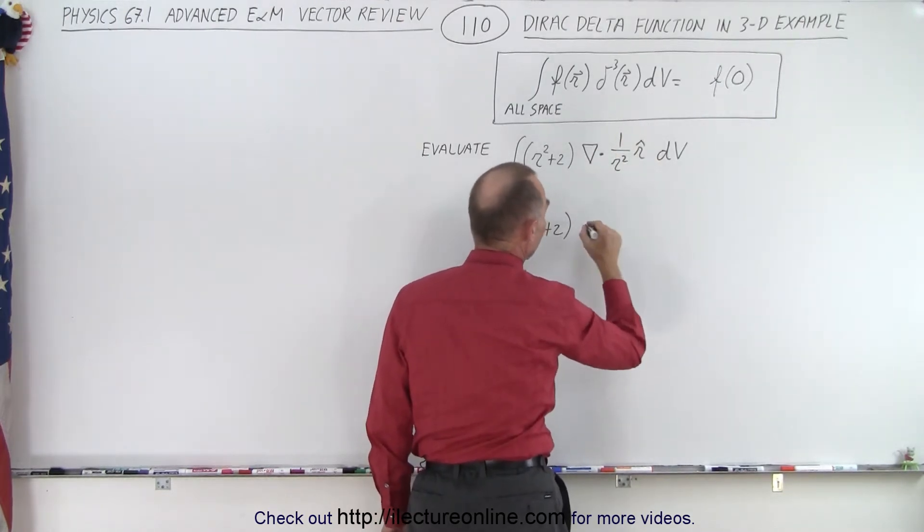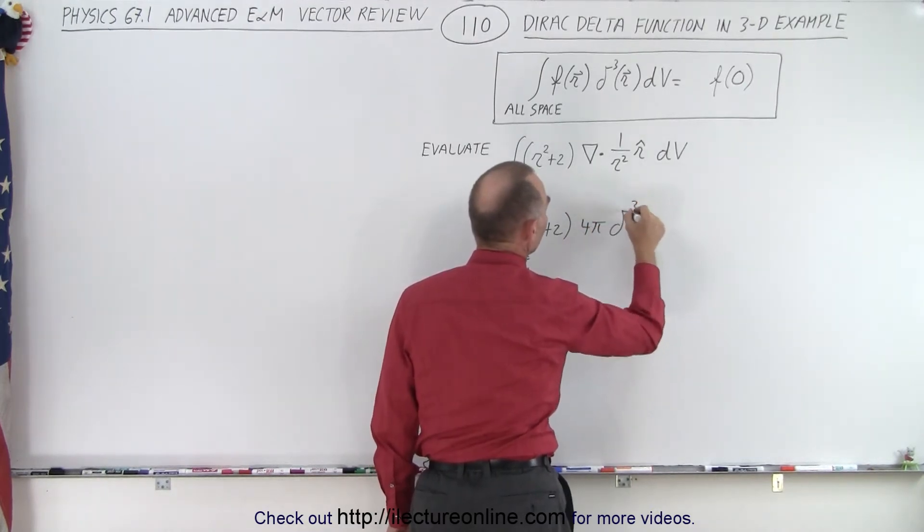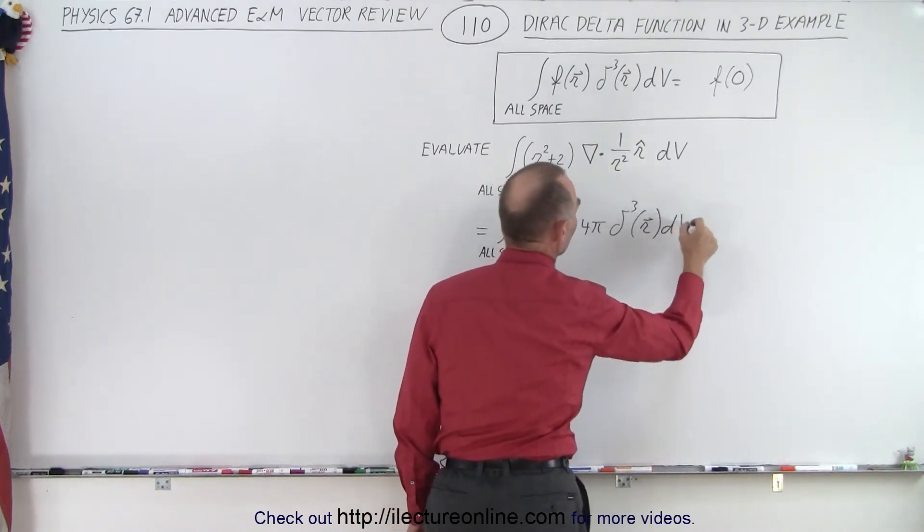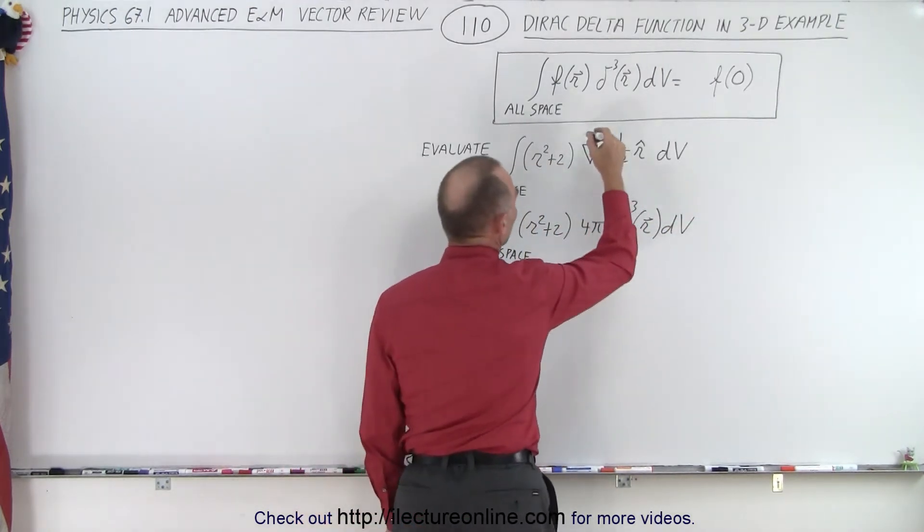Now because of this we also need to have a 4π factor in there, so multiply times 4π times the Dirac delta function in three dimensions in the r direction times dv.